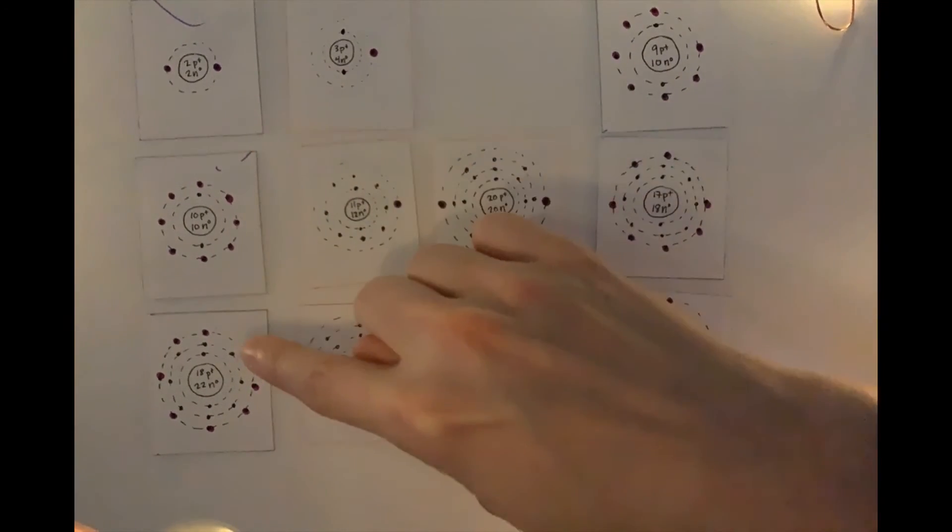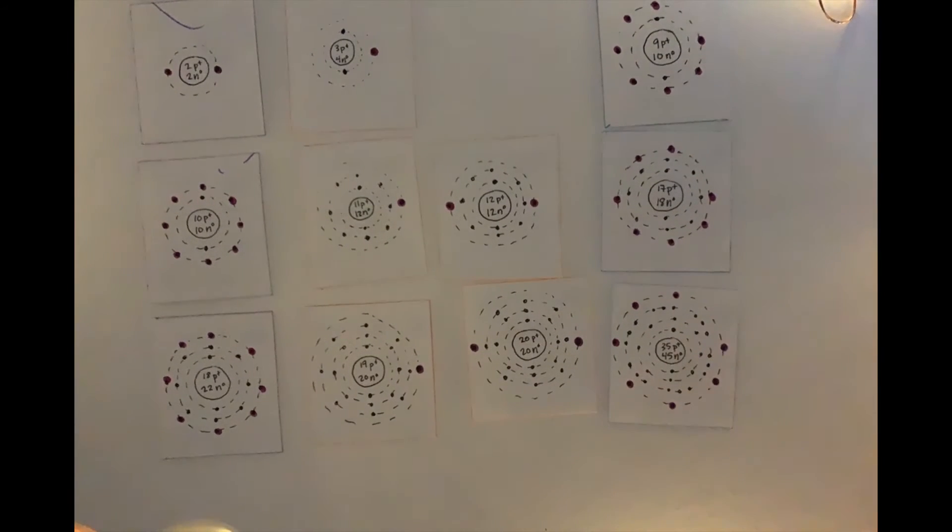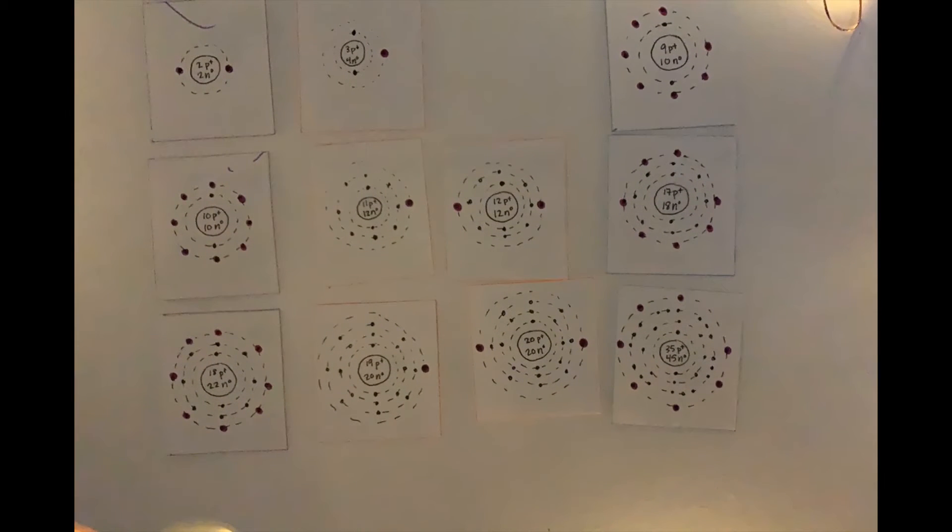This means that the electrons in an atom don't just determine its reactivity and charge, but it determines the properties of those elements. Elements with the same number of electrons in their outermost energy level have similar properties.